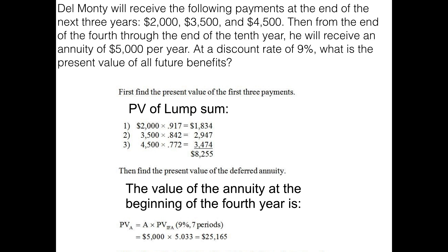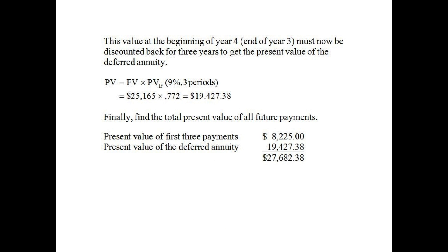We want to know the total net present value of all cash flows at the beginning. So we discount the twenty-five thousand one hundred and sixty-five dollars back to today over three periods at nine percent. From the present value of lump sum tables, the factor is approximately 0.772. Multiplying through, we get nineteen thousand four hundred twenty-seven dollars and thirty-eight cents. Adding that to the present value of the first three lump sum payments of eight thousand two hundred twenty-five dollars, we get a total net present value of the deferred annuity of twenty-seven thousand six hundred eighty-two dollars and thirty-eight cents.